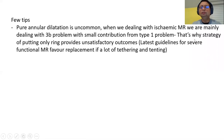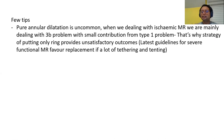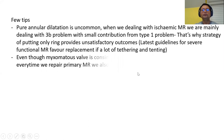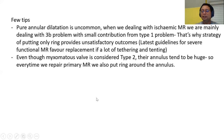A few additional tips: pure annular dilatation apart from chronic atrial fibrillation is uncommon. In ischemic MR we are mainly dealing with restricted closure — type 3b — with only small annular dilatation usually in the region of P2/P3. That is why a strategy of putting only a ring gives unsatisfactory outcomes. Even though myxomatous valve is considered Carpentier type 2, the annulus tends to be large, so every time we repair primary MR we also place a ring. Don't forget degenerative MR with thickening and calcification. In secondary MR — ischemic or dilated — it is mostly due to papillary muscle displacement, not LV dilatation per se. The old theory of papillary muscle dysfunction causing MR is incorrect — we need the papillary muscle to function to pull the leaflet upward; once it is dysfunctional, MR actually decreases.